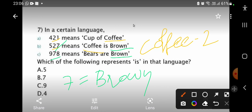Which of the following represents is in that language? So, is exists only in the second line. Second line means number 5, number 5 exists. So, option A, number 5 is the right answer. Thank you.